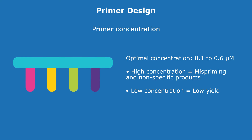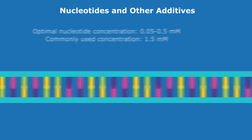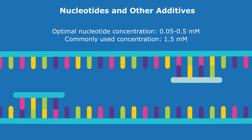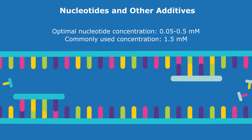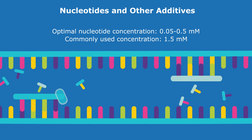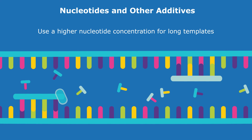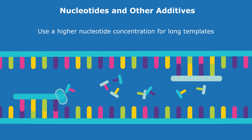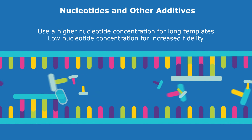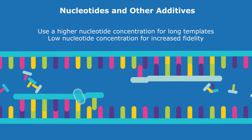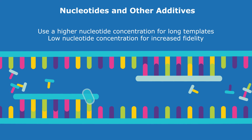In most common PCR applications, the final nucleotide concentration is recommended to be between 0.05 to 0.5 millimolar. A higher concentration is preferred for long-range PCR to improve the yield, while a lower concentration is recommended for increased fidelity when using non-proofreading polymerases.